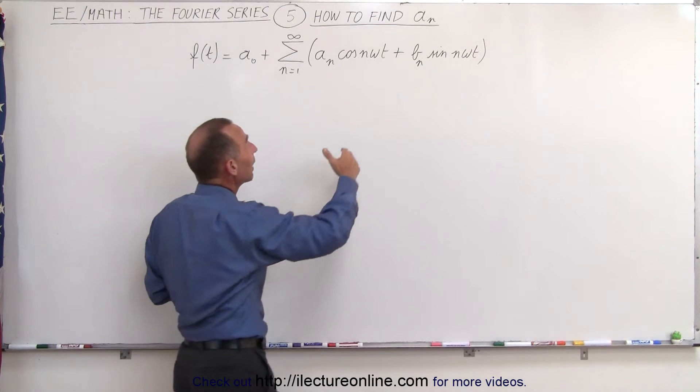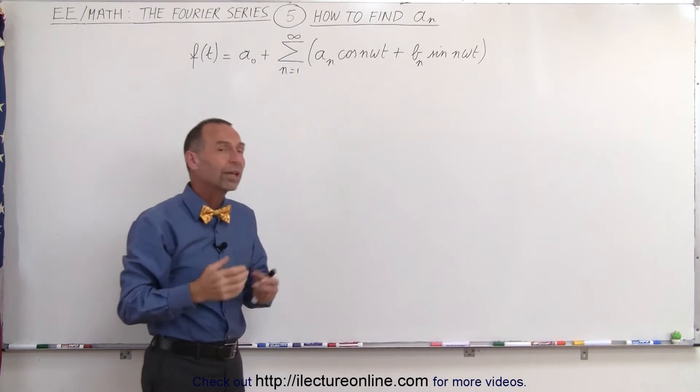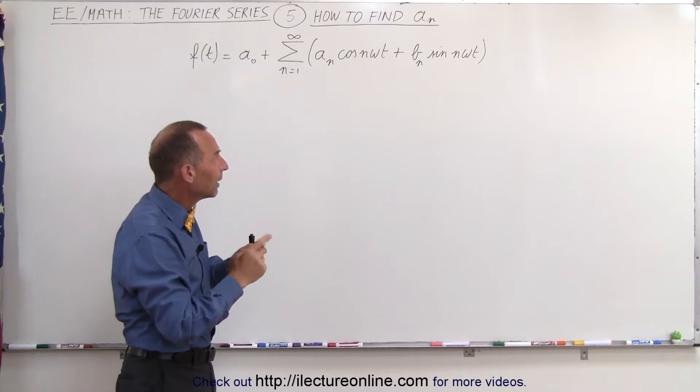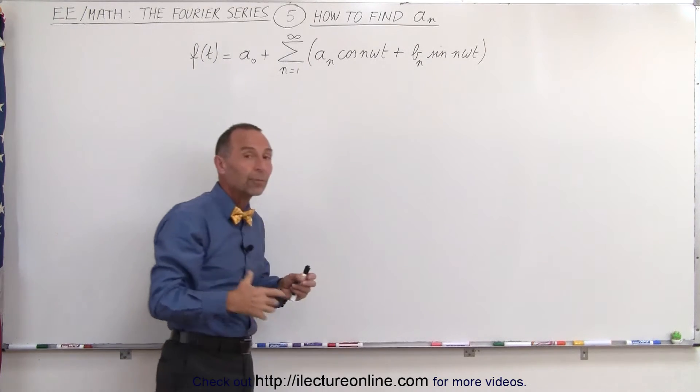Likewise, when we integrate the cosine of n omega t for one period, 0 to t, then we also get 0. And if we multiply the integral of the cosine times the sine, that also becomes equal to 0.